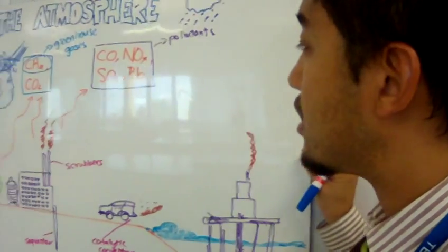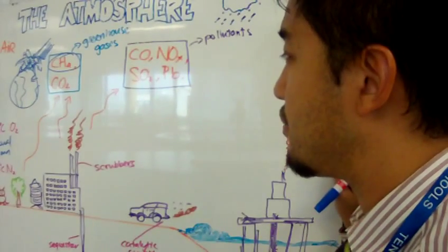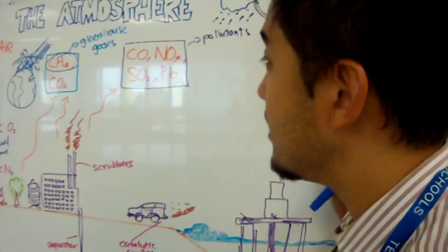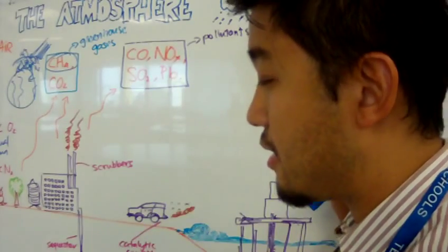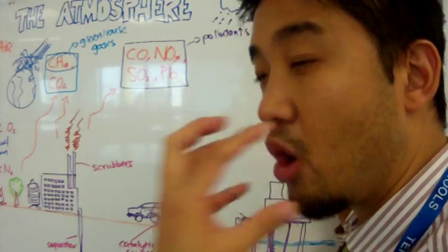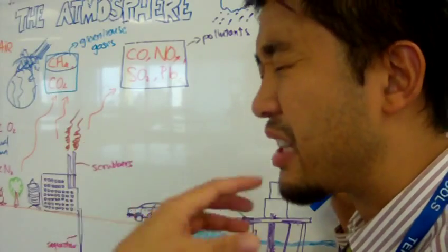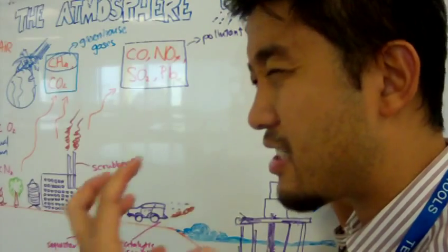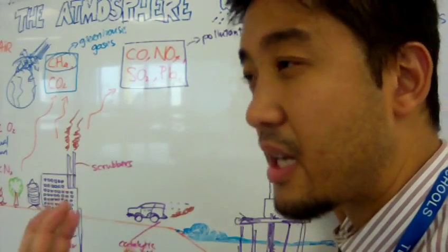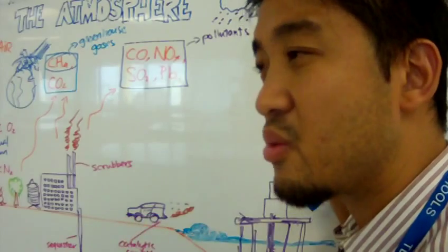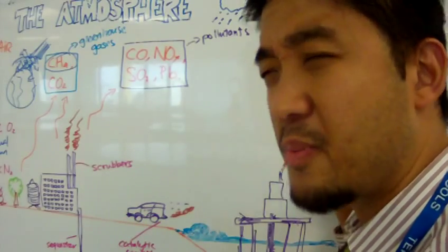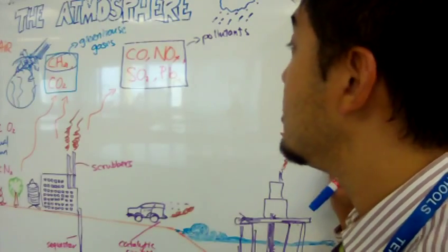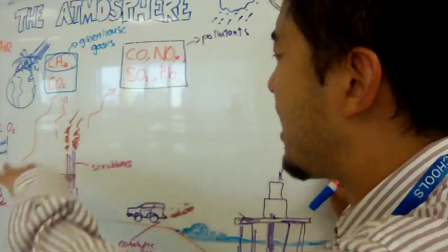Now let's talk about pollution, pollutants, and what kind of pollutants are emitted by human activity. Carbon monoxide is a very odorless, transparent, clear gas. It's a pollutant because it's poisonous. When you breathe it, you suffocate and die because it interferes with the transportation of oxygen in the bloodstream.